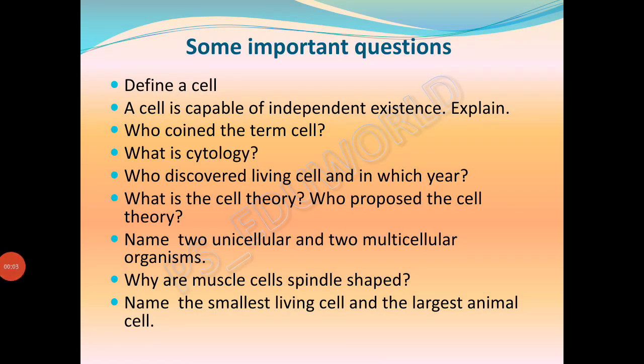Here I conclude part one of the lecture. Some important questions related to this lecture: Define a cell. A cell is capable of independent existence — explain. Who coined the term cell? What is cytology? Who discovered the living cell and in which year? What is the cell theory and who proposed it? Name two unicellular and two multicellular organisms. Why are muscle cells spindle shaped? Name the smallest living cell and the largest animal cell. I will soon be uploading part two of this lecture, so stay tuned and have a nice day. Bye.